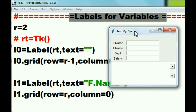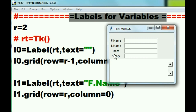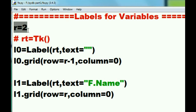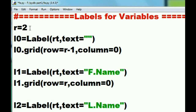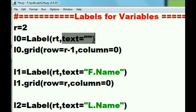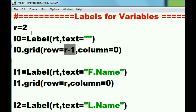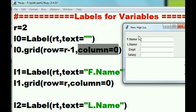The next thing I do is create a section called 'Labels for Variables'. Those labels will be the ones on the left-hand side: first name, last name, department, and salary. I set r equal to 2 as the row number, then label0 is assigned via the Label function placed into the rt window with blank text, placed into the grid at row r minus 1, which is row 1, column 0 — that's my blank row.